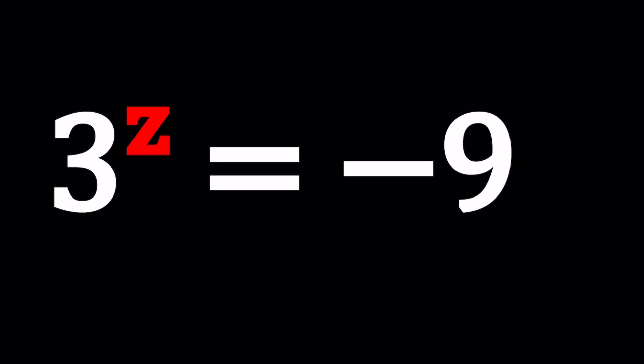I'm also going to show you some interesting results which we are going to verify. So first of all, think about this problem: 3 to the power of z is equal to a negative number. Can z be real? Well, can z be 2? 3 to the power of 2 is 3 times 3, which is 9 — positive 9. That's not negative 9.